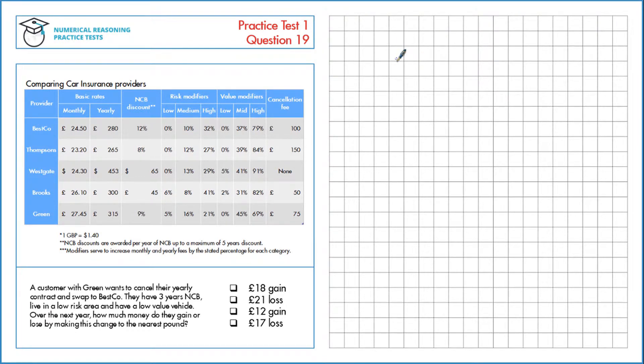A customer with Green wants to cancel their yearly contracts and swap to Besco. They have 3 years no claims bonus, live in a low risk area and have a low value vehicle. Over the next year how much money do they gain or lose by making this change to the nearest pound?